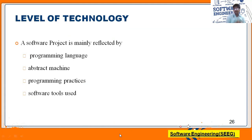The next factor is level of technology. Technology updates day by day — now we have artificial intelligence and machine learning — so we must adapt to the level of technology available at that time, which will cost more. A software project is mainly affected by the programming language and software tools used. If you used different tools last year and must use different tools this year, the programmer must be able to adapt to the technology.